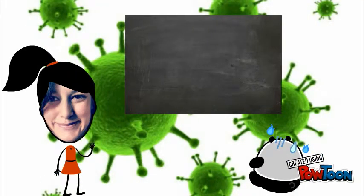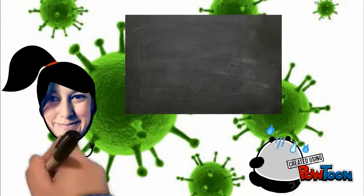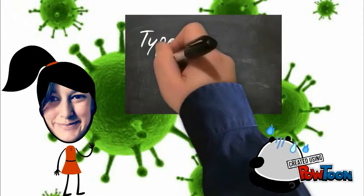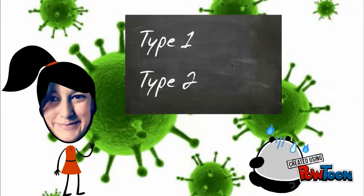There are two types of herpes simplex virus: type 1 and type 2. Type 1 usually infects cells that are around the mouth, causing cold sores.